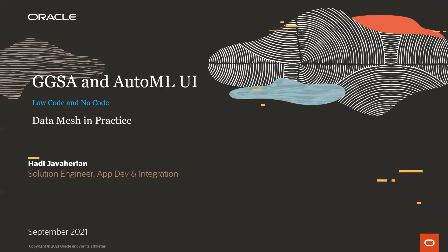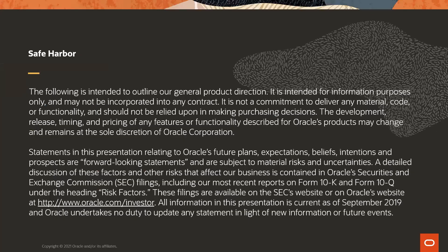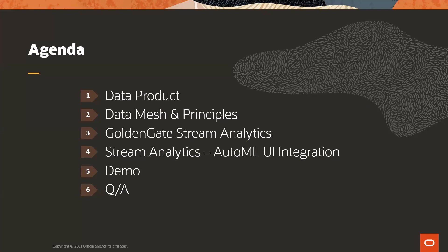Thanks so much, Marcos and Mark, for the invitation. I've been working with these two products — GoldenGate Stream Analytics and OML — for a while now, and I came up with a scenario where we could integrate them in a very nice, low-code, no-code (as far as the OML part is concerned) use case and show it in a demo. But before that, I wanted to show how this applies to the general idea of data mesh, data fabric, and data product.